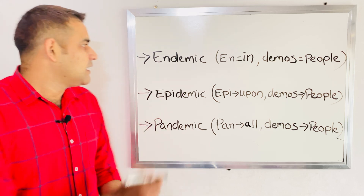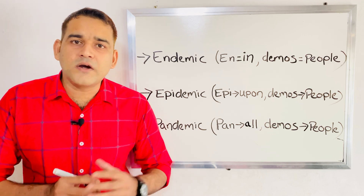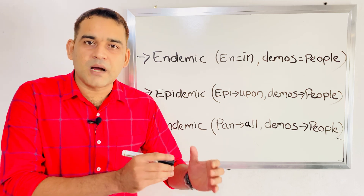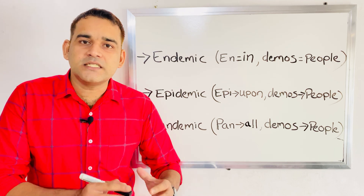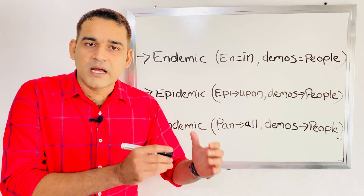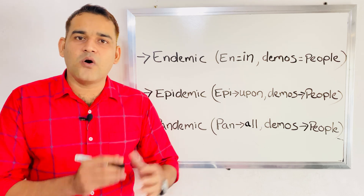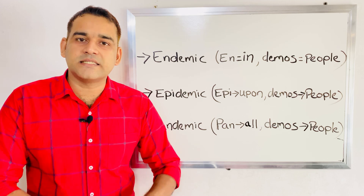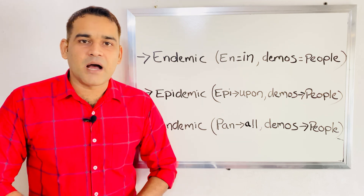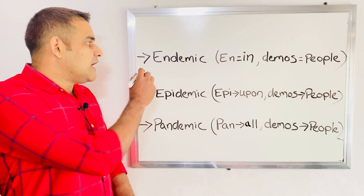First, let's look at endemic. Endemic means the constant presence of a disease in a particular area or in a particular community. That disease is constant — it is not going away, it is fixed. When a disease is constantly present in a community or in a particular area, we call it endemic.